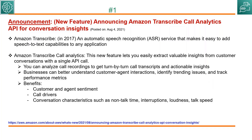The first one: Amazon Transcribe Call Analytics API for conversation insights is released. Amazon Transcribe was an ML service released in 2017 as an automatic speech recognition service. This new API lets us easily extract valuable insights from customer conversations. Some benefits include customer and agent sentiment, and conversation characteristics such as non-talk time, interruptions, loudness, talk speed, and things like that.